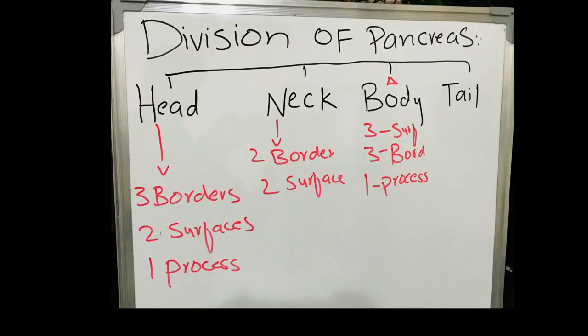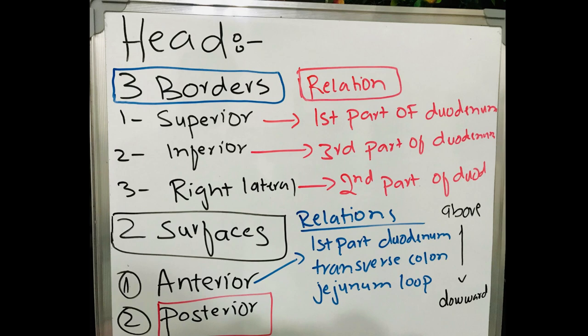The weight of the pancreas is around 80 to 90 grams. Anatomically, the pancreas is divided into four regions: head, neck, body, and tail. The head of the pancreas consists of three borders and two surfaces. The three borders are the superior border, inferior border, and right lateral border, and the two surfaces are the anterior surface and posterior surface.